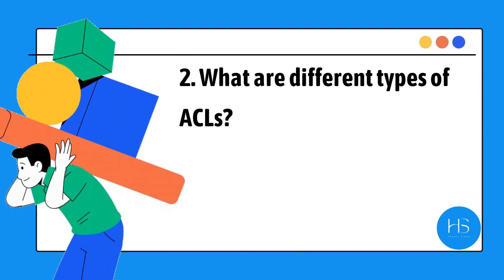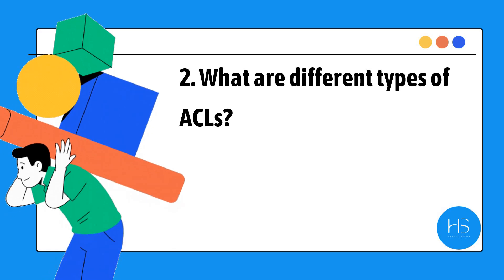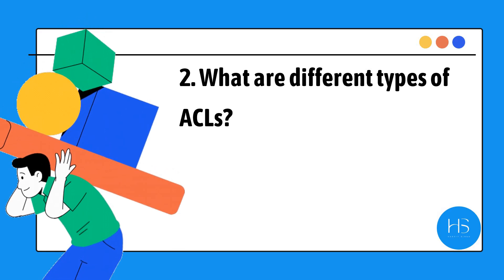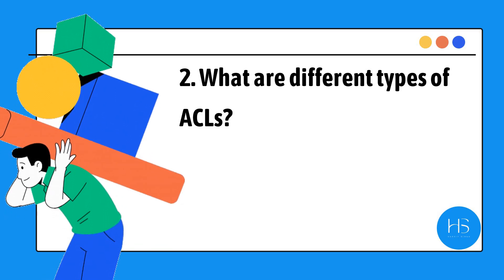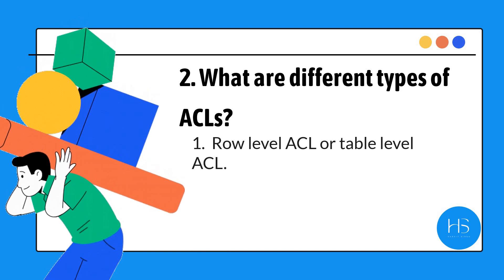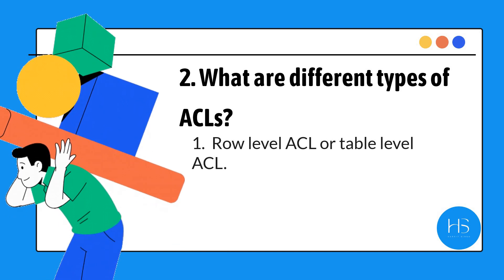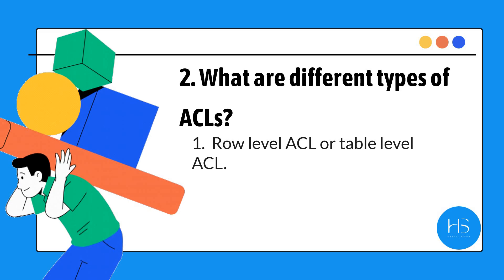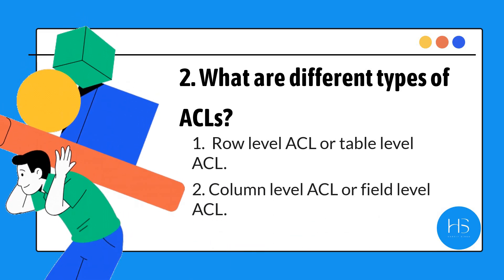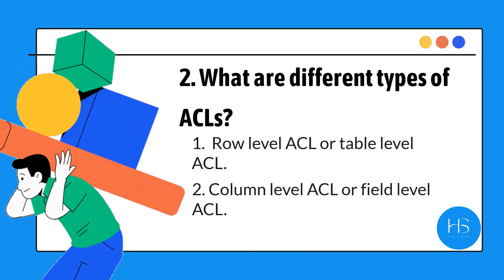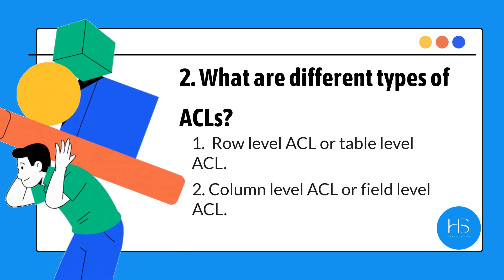Moving on: what are the different types of ACLs? This is a very commonly asked question so you should know the answer immediately. The first one is row level ACL, or we can call it table level ACL, which applies on the table level. The second one is column level ACL or field level ACL, which applies on a particular field. So if the interviewer asks you what are the different types of ACLs, just say table level ACL and field level ACL.